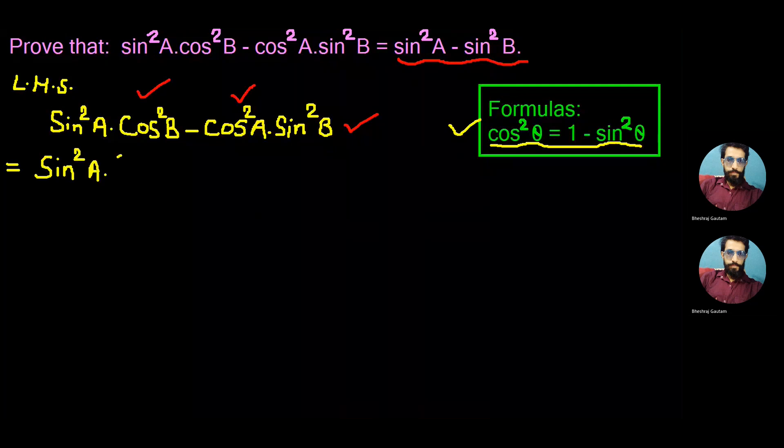sin²A, bracket, 1 - sin²B, expressing cos in the form of sin, minus, similar to the previous one, expressing cos in the form of sin we can write 1 - sin²A into sin²B as it is.